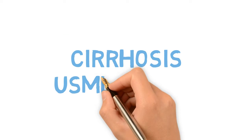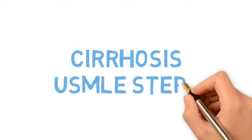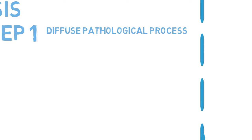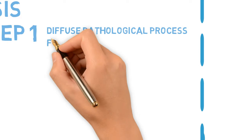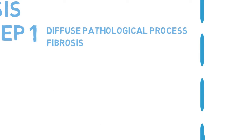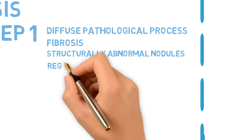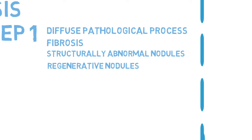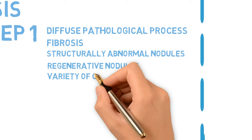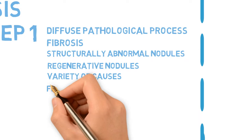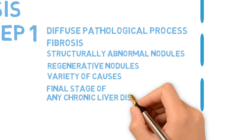Cirrhosis is a diffuse pathological process characterized by fibrosis and conversion of normal liver architecture to structurally abnormal nodules known as regenerative nodules. It can arise from a variety of causes and is the final stage of any chronic liver disease.